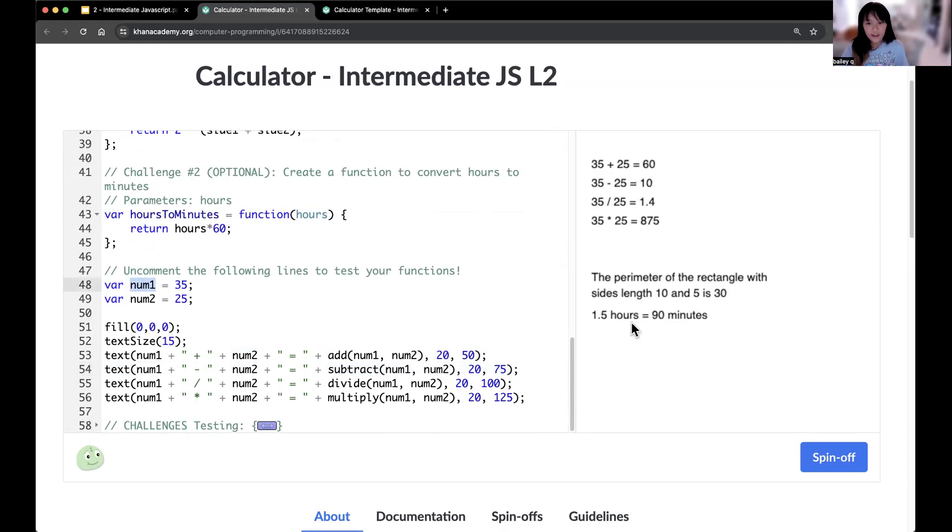I'll write that out. So this is the num1 part. Num1 plus, and this plus is to add onto the message. So we are not just having one value in the message, we are having multiple. So num1 plus, and then the string, which is the actual plus sign, plus num2, which is 25, plus the equal sign, which is the string right here, plus the actual function. So add num1, num2, which would output 60. So in this case, this value is technically going to be 60.